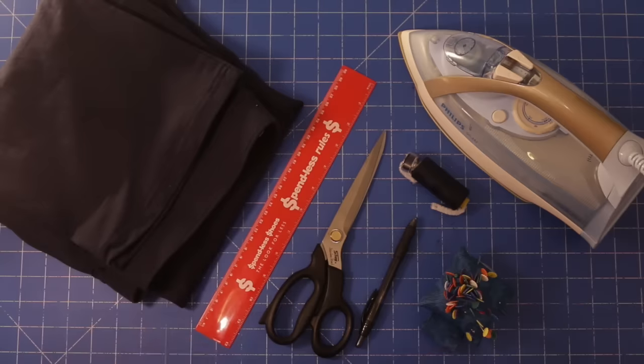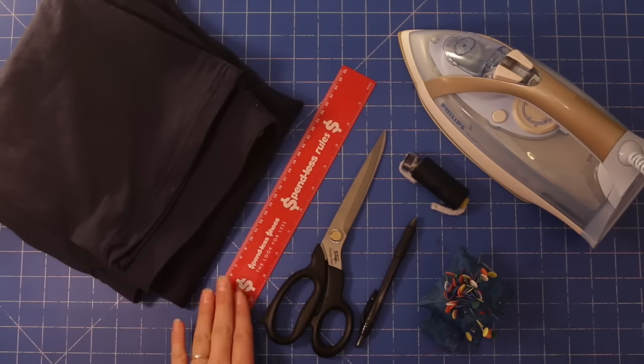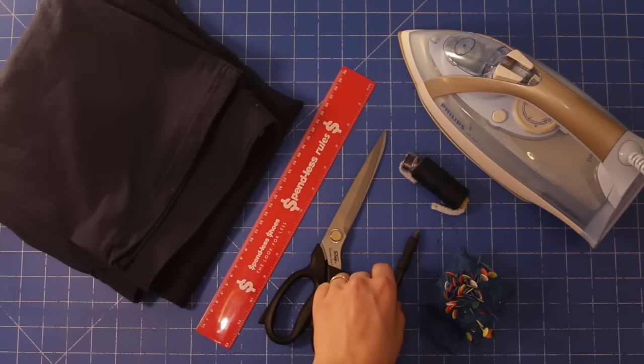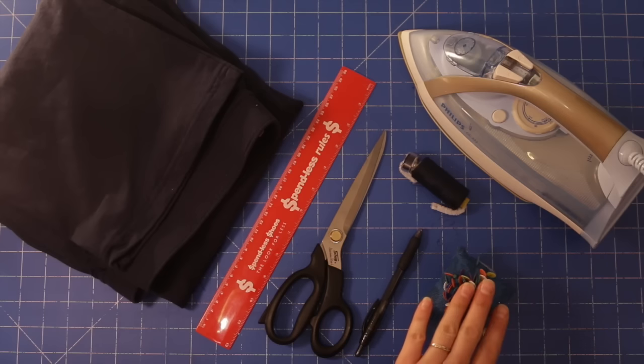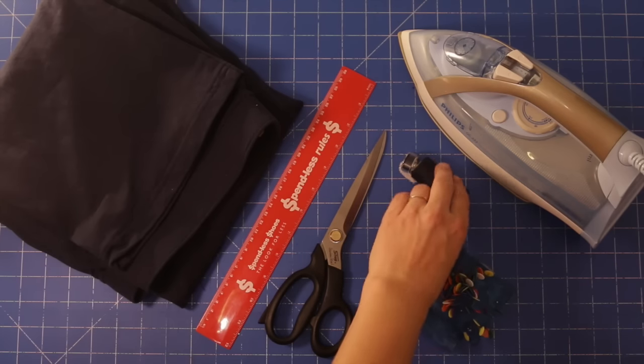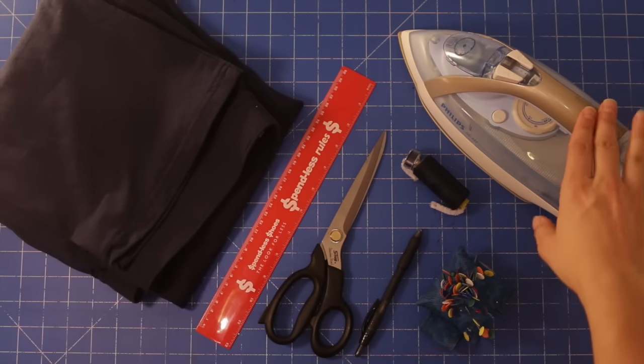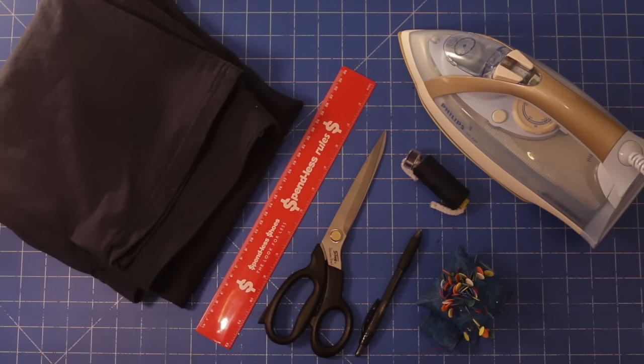So let's get going with how to hem pants using the straight stitch with your sewing machine. To hem your pants you will need your pair of pants, of course, a ruler, a pair of scissors, a pen or chalk or something to mark the pants with, some pins, some thread in the matching color to your pants, you will need an iron but it's not completely essential. You will also need your sewing machine with a standard foot attached. And if you have a friend that can help you or a mirror to look into, that would be helpful as well.